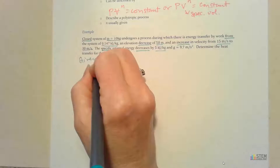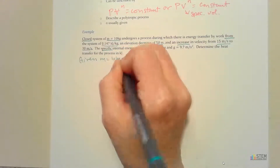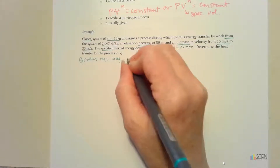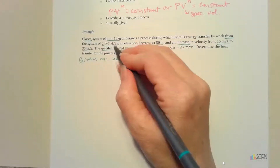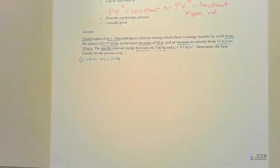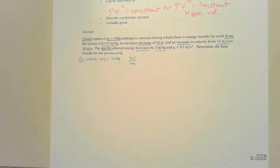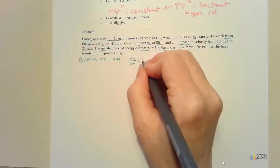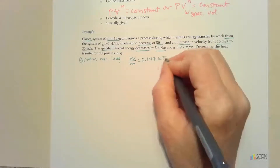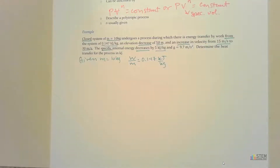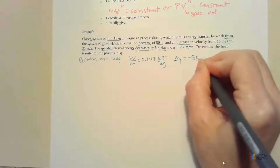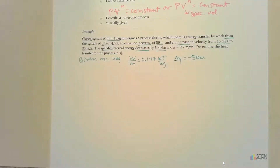Let's write out what we're given. Mass is 10 kilograms. Work given to us is 0.147 kilojoules per kilogram — notice the units are kilojoules per kilogram, not just kilojoules. That means what they gave you is work per mass, so W over M equals 0.147 kilojoules per kilogram. Next, we've got an elevation decrease, so delta Y equals negative 50 meters — negative because it's a decrease.